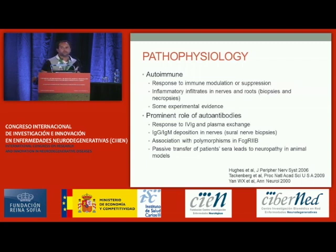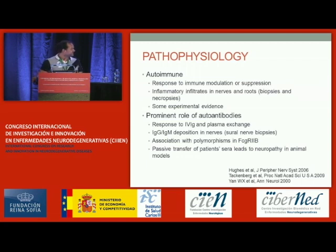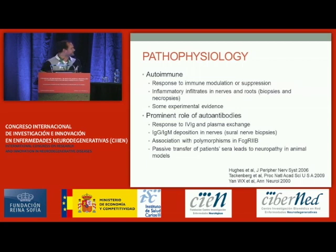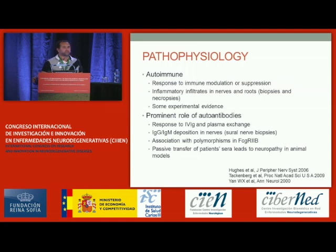It is presumed autoimmune because we know it responds to immune modulation or immune suppression, because we can find inflammatory infiltrates in nerves and roots in necropsies and biopsies, and also because some experimental evidence shows an autoimmune process in its pathogenesis. There has always been believed to be a prominent role of autoantibodies — because this disease responds well to IVIG and plasma exchange, because IgG or IgM deposition has been found in sural nerve biopsies, because it associates with polymorphisms in FC-gamma receptors, and because passive transfer of serum from patients leads to inflammatory neuropathy in animal models.